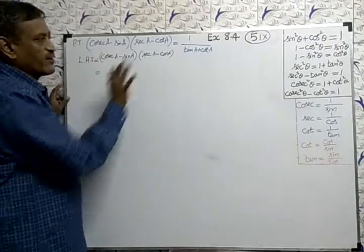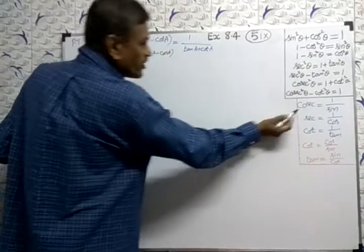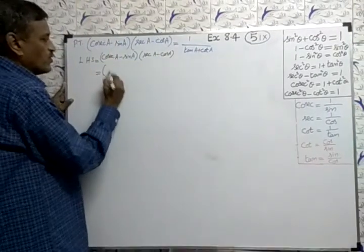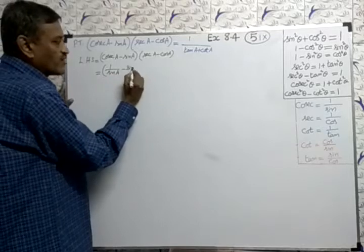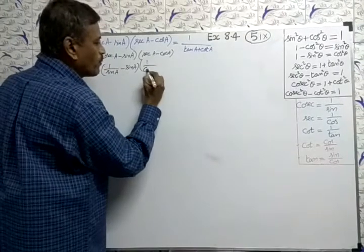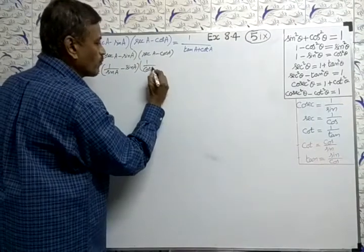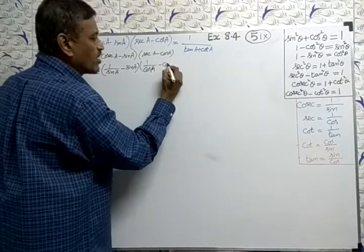Here, LHS I have written here. Now, cosec means what is cosec? 1 by sin. So, 1 by sin A minus sin A. Sec means 1 by cos. 1 by cos A minus cos A.